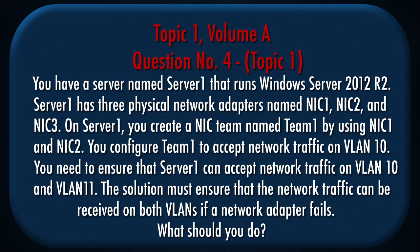Question number 4, Topic 1. You have a server named Server1 that runs Windows Server 2012 R2. Server1 has 3 physical network adapters named NIC1, NIC2, and NIC3. On Server1, you create a NIC team named Team1 by using NIC1 and NIC2. You configure Team1 to accept network traffic on VLAN10. You need to ensure that Server1 can accept network traffic on VLAN10 and VLAN11. The solution must ensure that network traffic can be received on both VLANs if a network adapter fails.